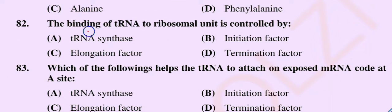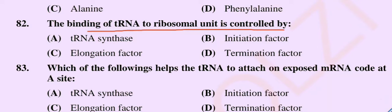Question number 82. The binding of transfer RNA to the ribosomal unit is controlled by: option A, transfer RNA synthase; option B, initiation factor; option C, elongation factor; option D, termination factor. The correct option is option B, initiation factor.